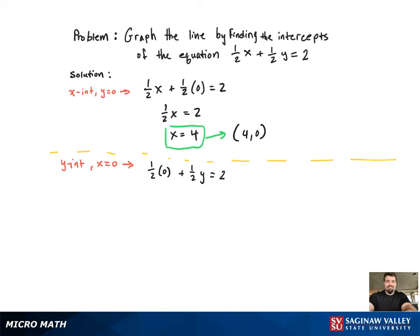Now we're going to get 1/2 y equals 2. Multiply both sides by 2, get y equals 4. That's going to be your y-intercept, and that corresponds to the point (0, 4).